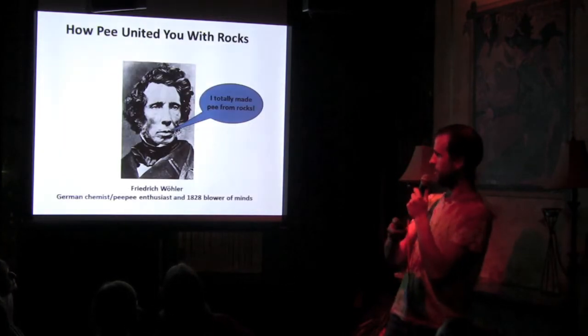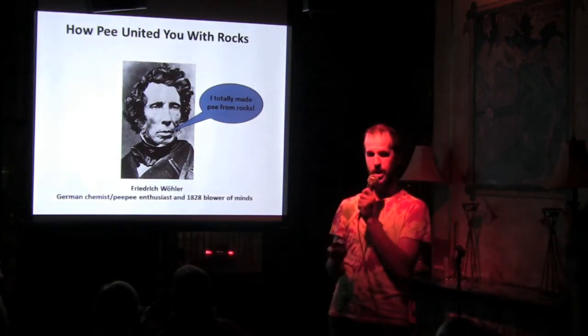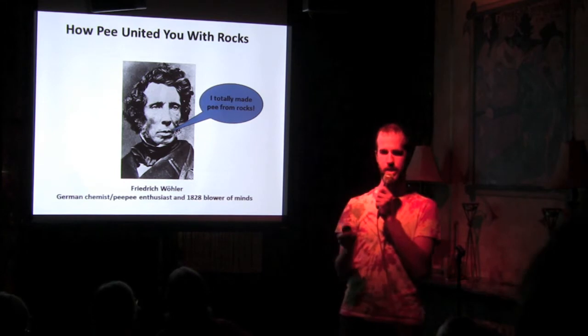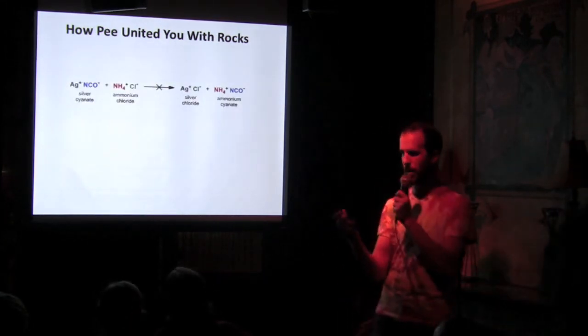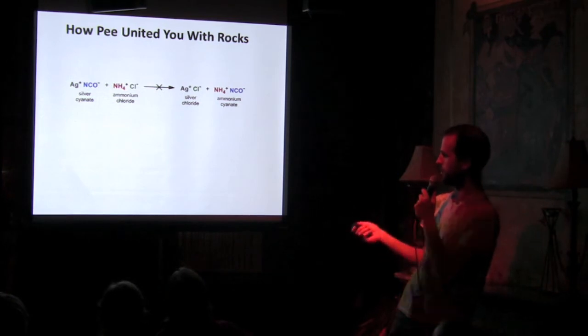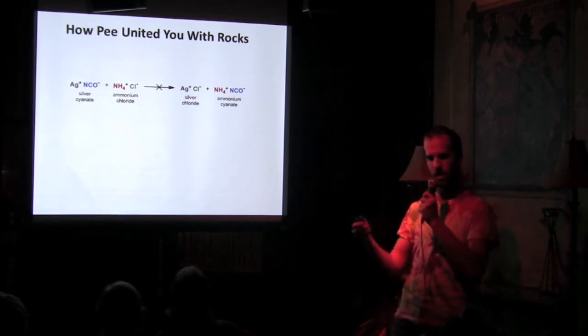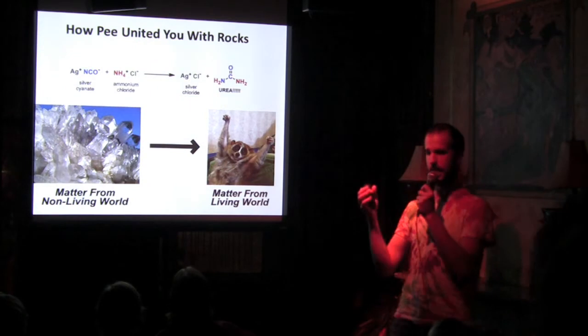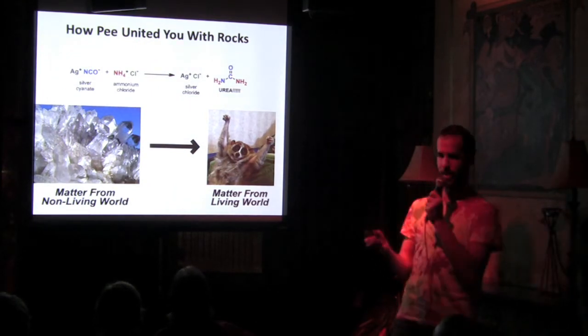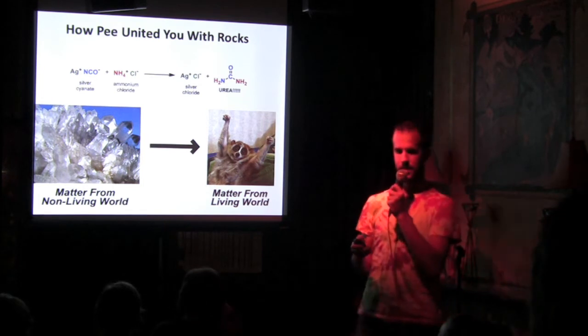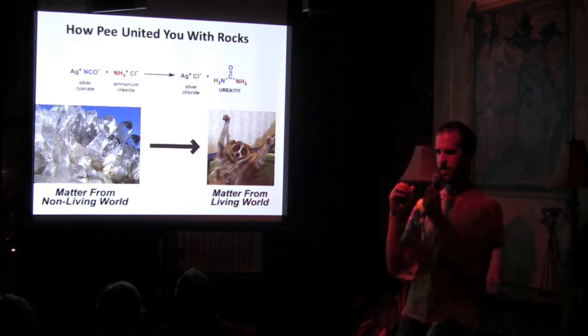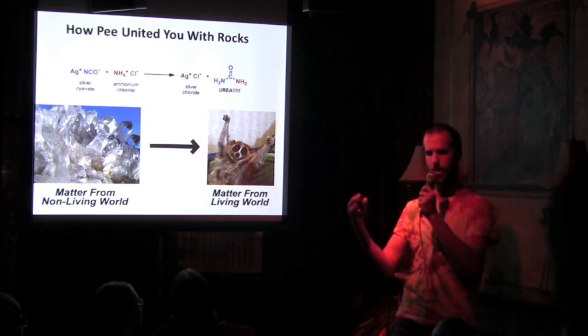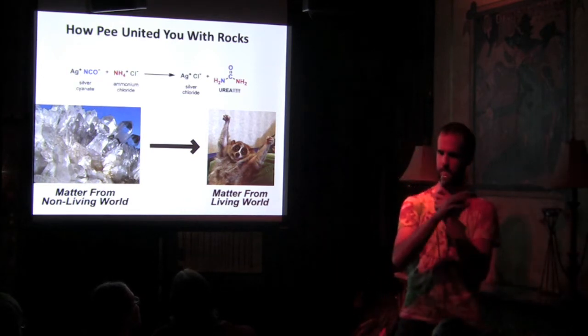And so this was true until this dude, Friedrich Wöhler, came along and blew everyone's minds in 1828 and did exactly what nobody thought he could do. And so he was an inorganic chemist, a rock chemist. He was trying to take these two salts and just swap the ions. That's all he wanted to do. But instead what happened is he made urea. And so he'd taken matter from the non-living world and turned it into matter from the living world and blown people's minds. So people had to kind of change the way they thought about vitalism and about how the matter from the living world related to matter from the non-living world.